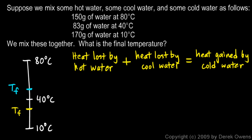Now I'm going to put in the numbers and work out the math with this equation. The heat lost by the hot water will be mc delta t for the hot water, plus the heat lost by the cool water, mc delta t for the cool water. That equals the heat gained by the cold water, mc delta t for the cold water. Now we'll put in numbers for each of these.